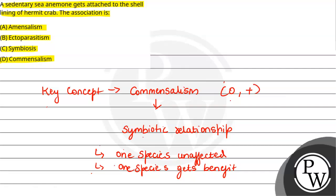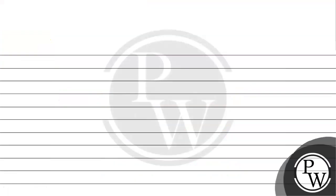Example के बात करें तो example में हमारा आता है barnacles जो कि whale के उपर attach हो जाते हैं. So इसमें जो barnacles होते हैं उनको profit मिल रहा है, उनको mobility provide होती है and जो whales हैं उनको वो unaffected रहते हैं.